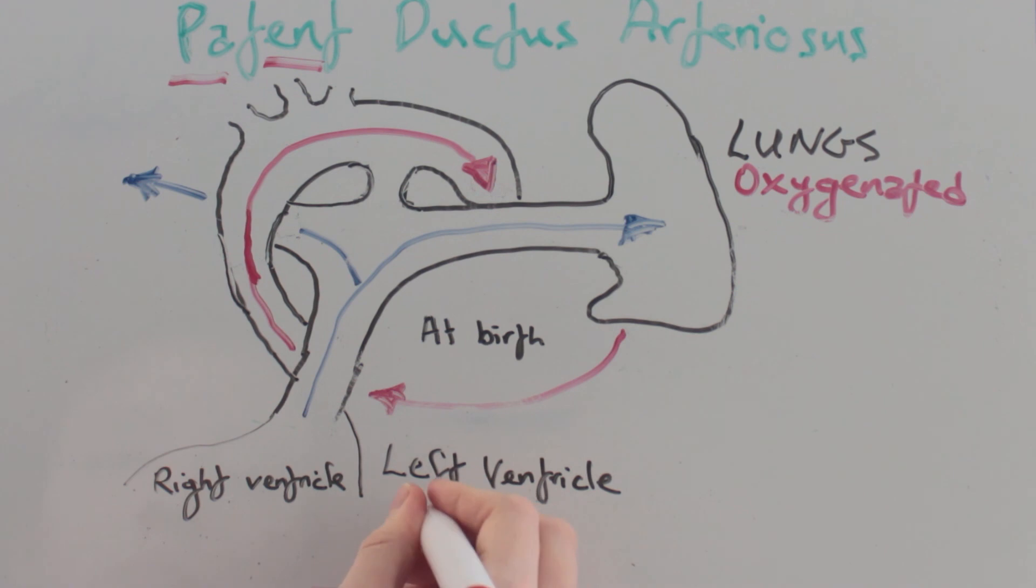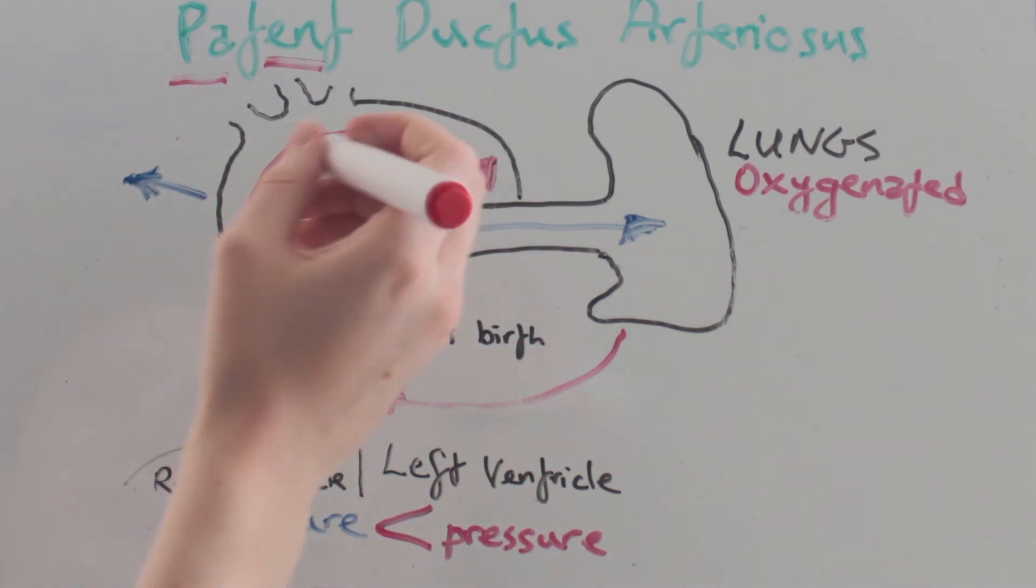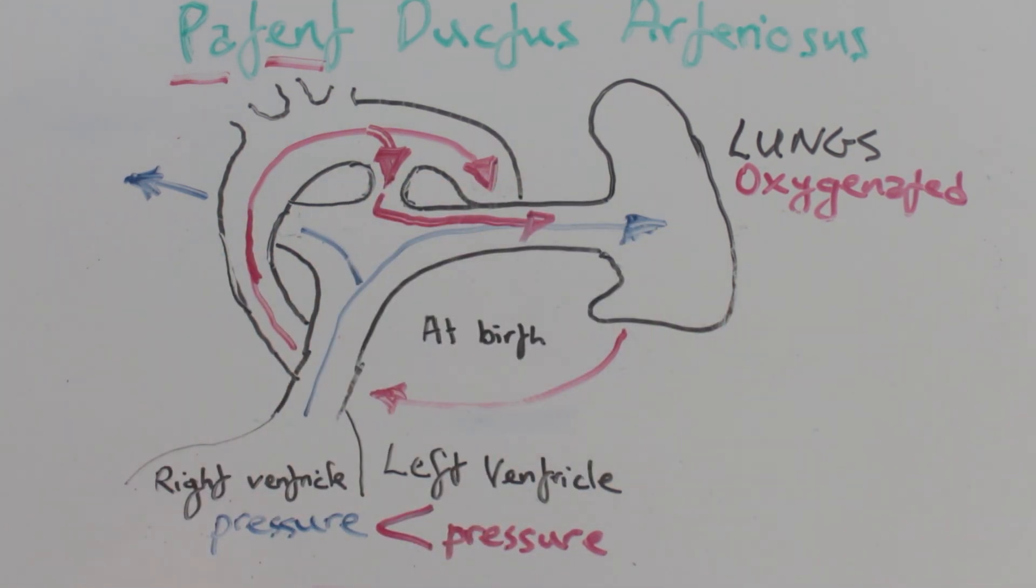Let's look at what happens when the ductus arteriosus remains open. Pressure is greater on the left hand side. Some of this red blood from the aorta will be shunted across the ductus into the pulmonary trunk where it takes an extra unnecessary trip to the lungs.